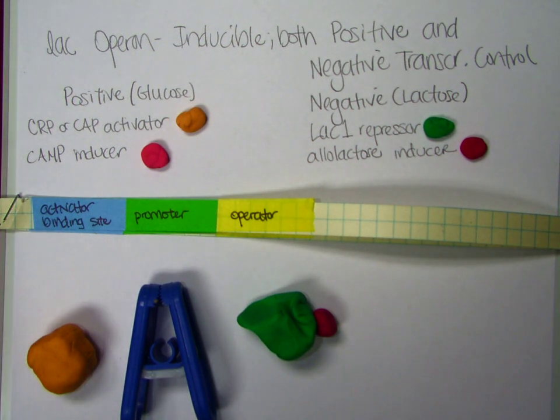So this inactive activator is going to become activated when there is cyclic AMP present. So cyclic AMP, you'll hopefully remember, is produced when there's a low amount of glucose in the environment. The group translocation process that brings in the glucose instead shunts itself and produces cyclic AMP instead. So the presence of cyclic AMP is the signal for low glucose.